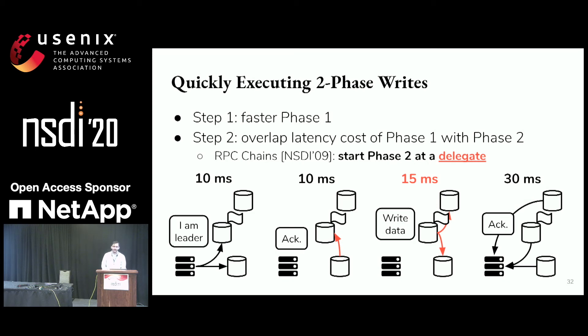Neither of these optimizations are new — RPC chains and flexible Paxos are known techniques. However, we observe that the combination of the two can get you close to a one-round write protocol.